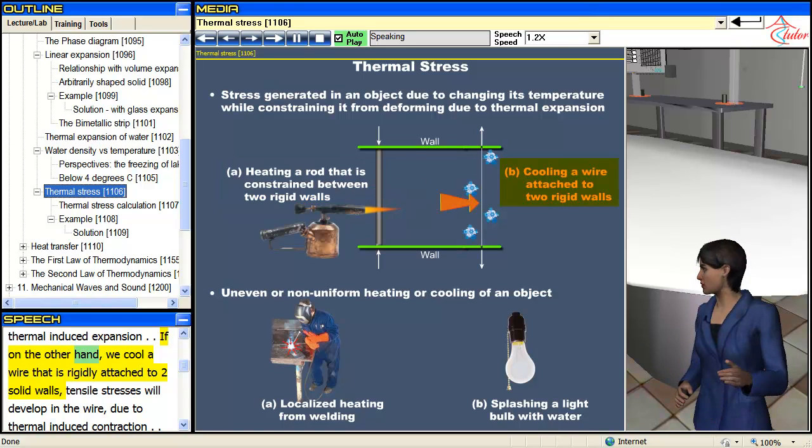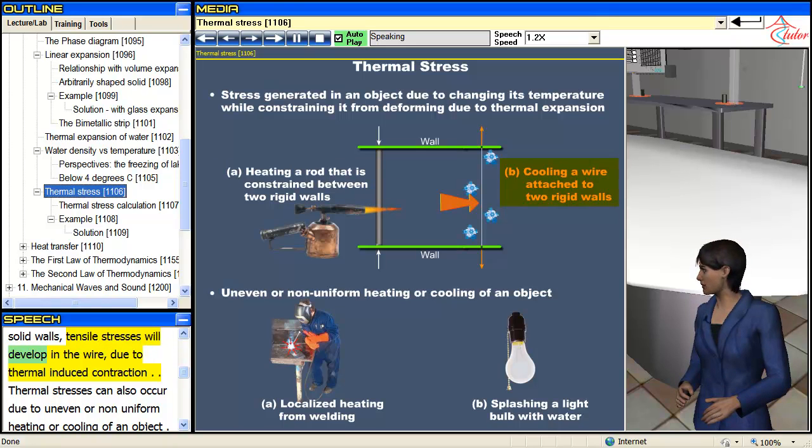If on the other hand, we cool a wire that is rigidly attached to two solid walls, tensile stresses will develop in the wire due to thermal induced contraction.